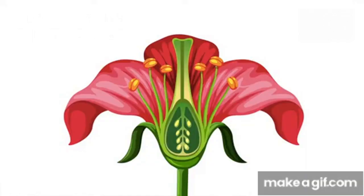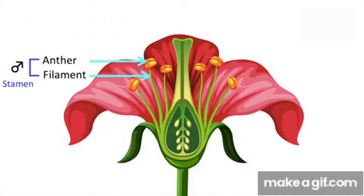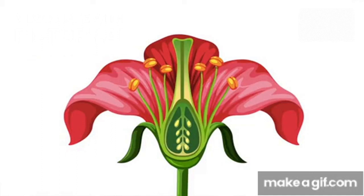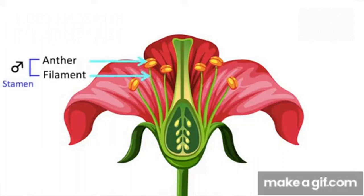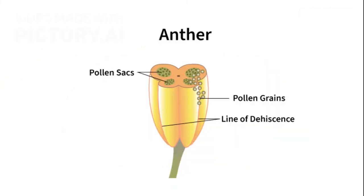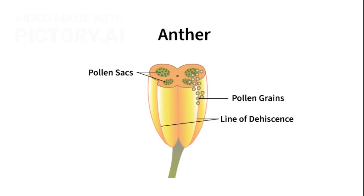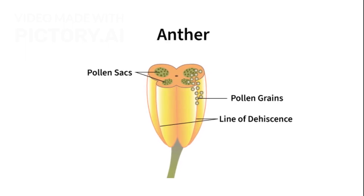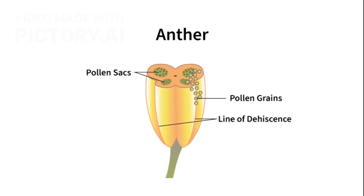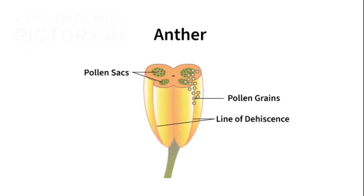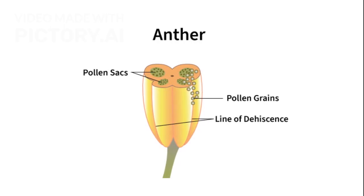Stamen is the male reproductive organ. Each stamen has two parts: first, the anther — bilobed, produces pollen grains; second, the filament — a stalk that supports the anther. The anther contains pollen sacs with microsporangia, which produce pollen through microsporogenesis.